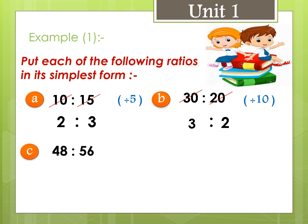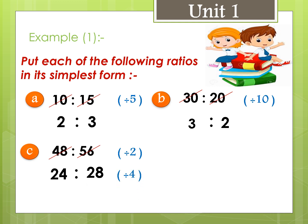Letter c: 48 to 56. Since 48 and 56 are both even numbers, we divide them by 2: 48 divided by 2 equals 24, and 56 divided by 2 equals 28. Since 24 and 28 are both divisible by 4, we divide: 24 divided by 4 equals 6, and 28 divided by 4 equals 7. The ratio is 6 to 7.